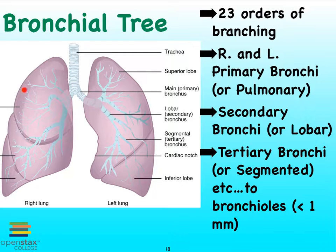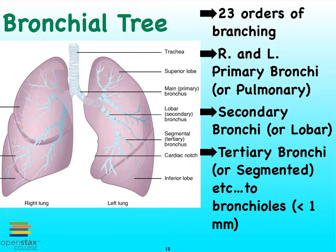Our lungs are made up of lobes — we'll come back to that when we get to our video on the lungs. When we see that our primary bronchi splits such that we end up seeing branches going into each lobe, we talk about the secondary bronchi or the lobar bronchi. And finally, each one of these lobes is made up of segments, and therefore we have tertiary bronchi or segmented bronchi going to these segments.